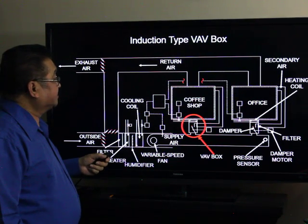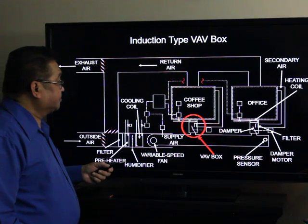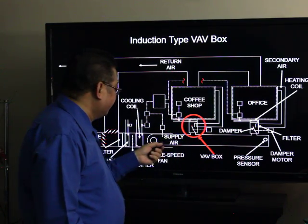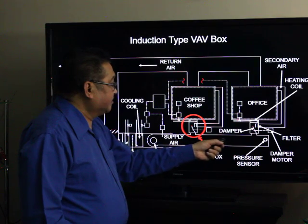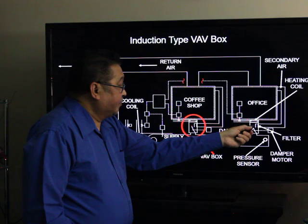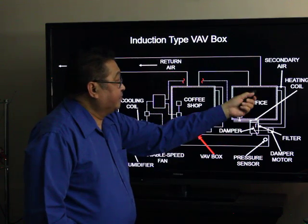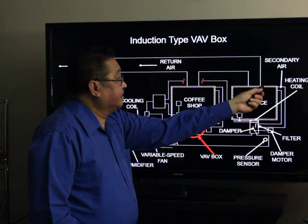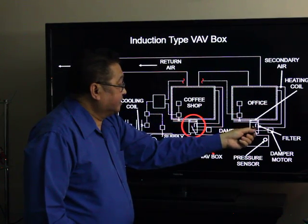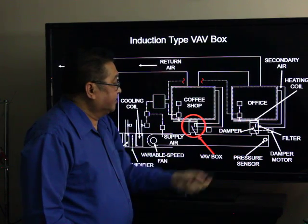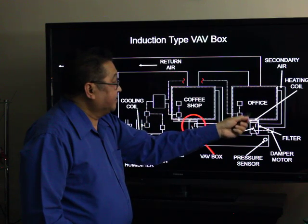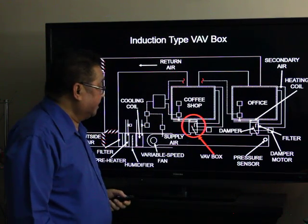To solve the cold air dumping problem, we have the induction type VAV box. A damper controls the amount of cool air going to the zone, and it provides a venturi effect where part of the zone air — secondary air — is recirculated and sucked through the venturi back into the zone, ensuring a constant flow of air to avoid cold air dumping.